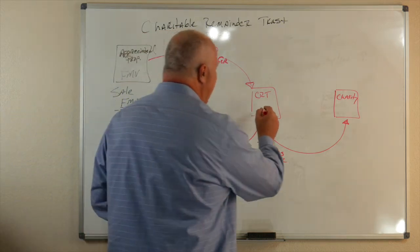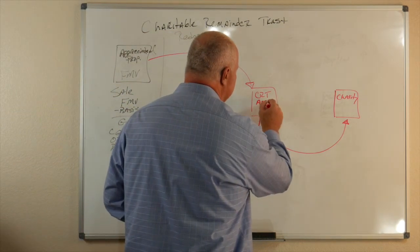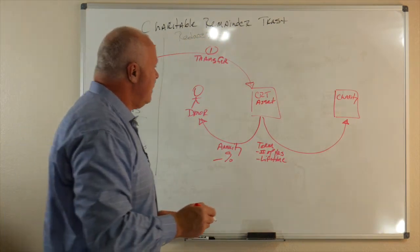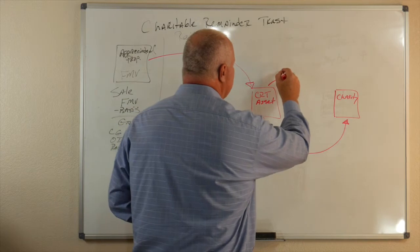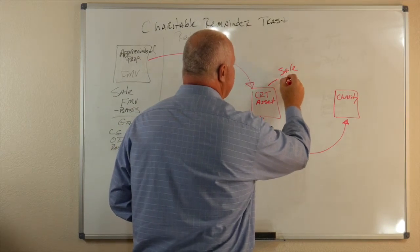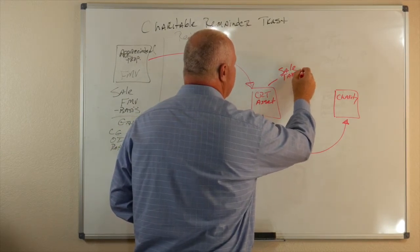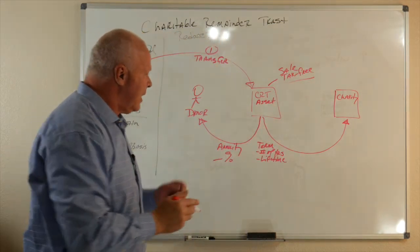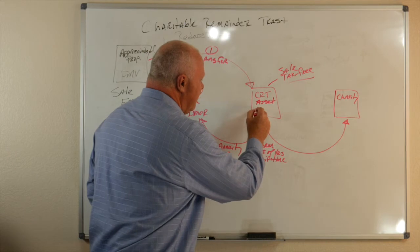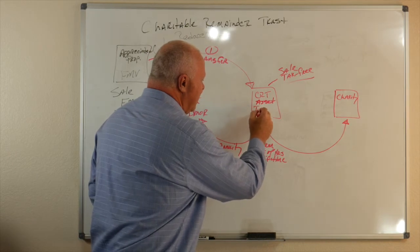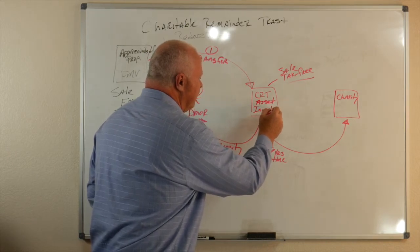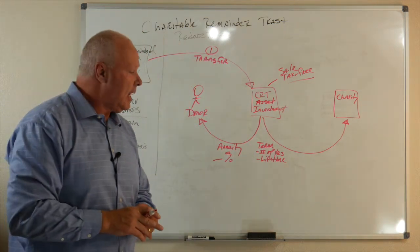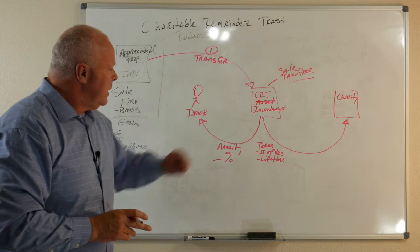Now, once we have that asset owned by the charitable remainder trust, now this charitable remainder trust, they can sell the asset tax-free. It's a charitable entity. So now, they can come and say, asset now becomes an investment or a managed account. Whatever they want as trustee, they can manage that account.